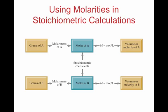Using molarity in stoichiometric calculations, this is part of the big heart diagram I showed you. You can go from the volume and molarity of something to the moles of something by using the molarity, and then we can go to grams by using the molar mass. Or we can go to something completely different by using the mole ratio, which we get from the coefficients of the balanced chemical equation. This all works back into the big cross with the heart in the middle.